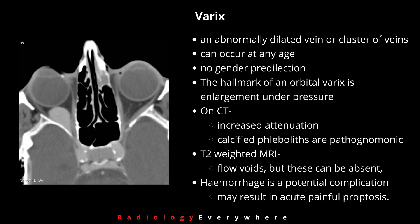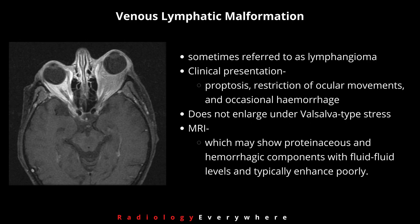On CT, increased attenuation due to blood products and calcified phleboliths are pathognomonic. On MRI, T2-weighted imaging shows flow voids, but these can be absent especially if there is variceal thrombosis. Hemorrhage is a potential complication and may result in acute painful proptosis.